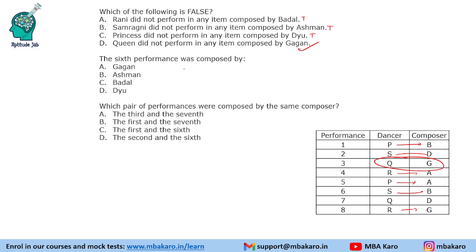Question 3: The sixth performance was composed by — the composer is Badal. Question 4: Which pair of performances were composed by the same composer? Third and seventh — G and D — wrong. First and seventh — B and D — not correct. First and sixth — B and B — that is the right answer. This was the solution to the set and the answers to all the questions.